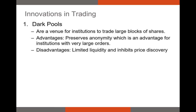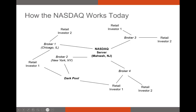Let's wrap up this video by talking about some of the more interesting innovations that have taken place in the financial markets in the last several years. The first innovation is dark pools — trading networks for broker-dealers that are not connected to the main exchange. The biggest advantage is that a dark pool preserves the anonymity of the buyers and sellers of securities within it, which is a big advantage for institutions that want to make large orders. Essentially, you can join this dark pool and your trades will occur off the main exchange as private trades.